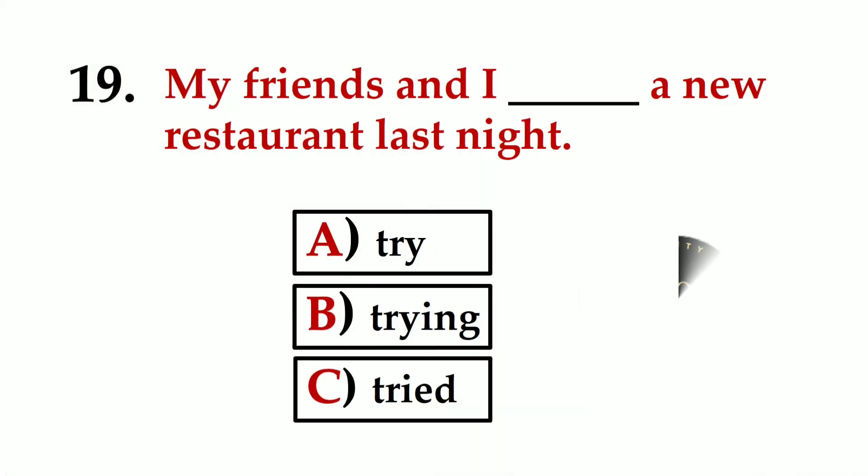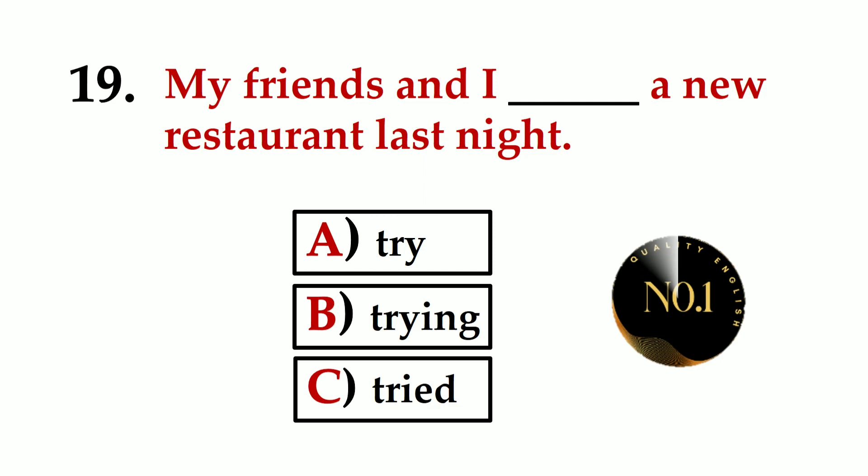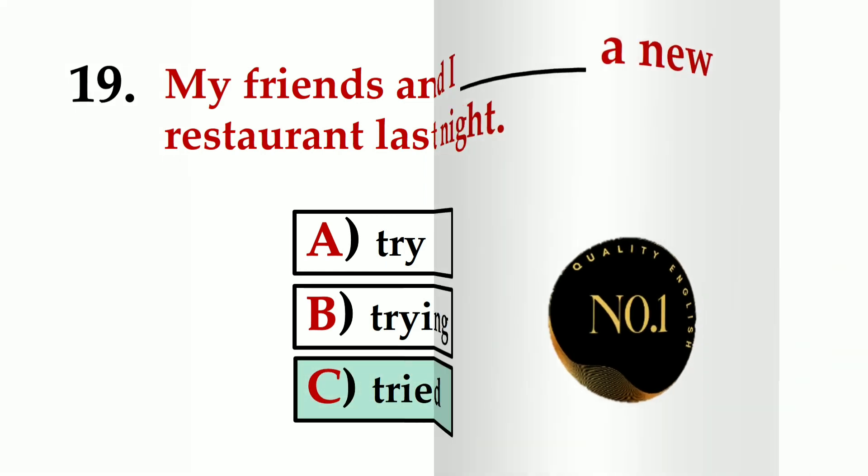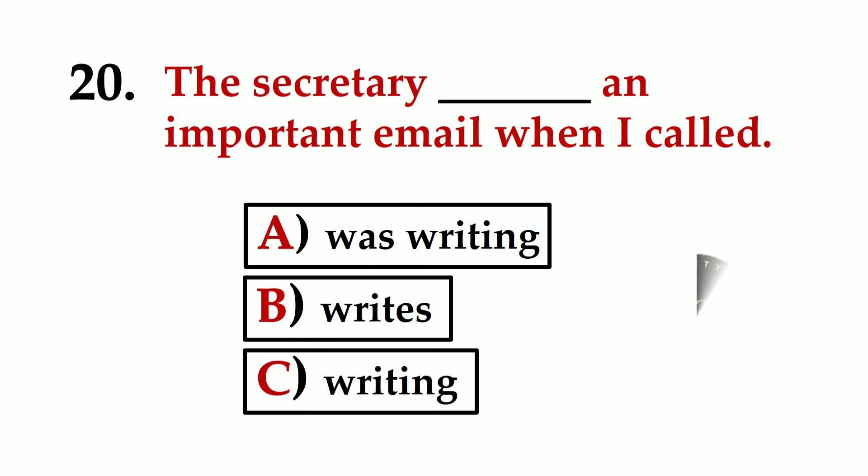Number nineteen: My friends and I ___ a new restaurant last night. A) try, B) trying, C) tried. The correct option is C) tried.